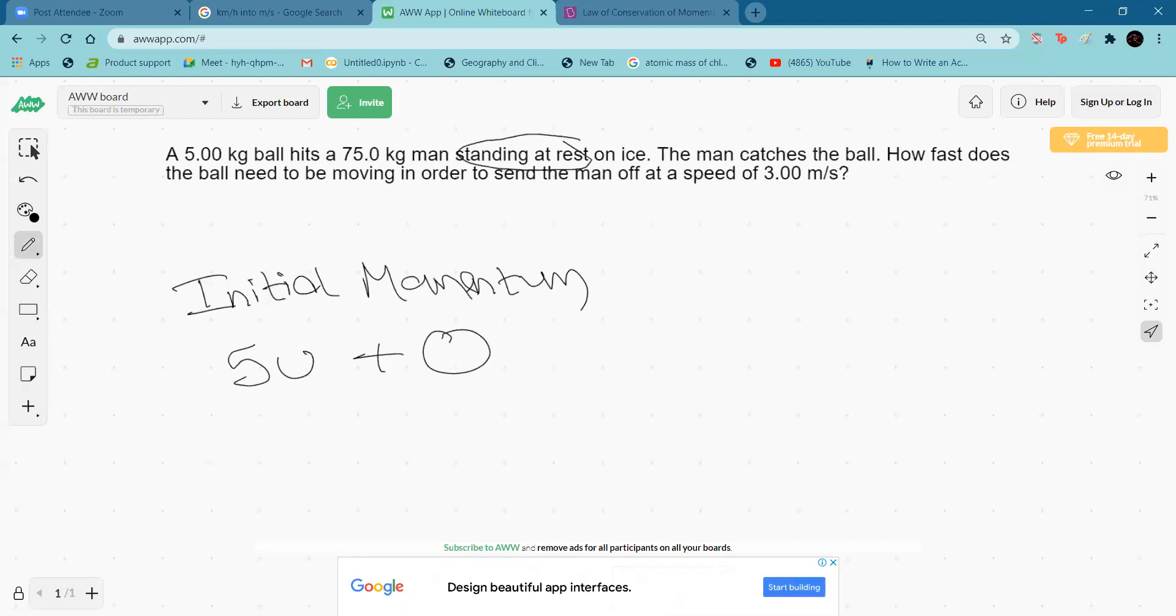Now for the final momentum, the problem asks how fast the ball needs to be moving to send the man off at 3 meters per second. As the man catches the ball, their velocity becomes the same.